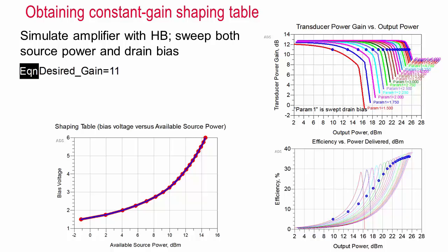Say you want to maintain a constant gain of 11 dB. When the available source power is 7 dBm, the output power needs to be 7 plus 11 equals 18 dBm. Drawing a line up from the 18 dBm output power point until it crosses one of the gain versus output power lines at 11 dB, we see that the drain bias needs to be set to approximately 2.5 volts.